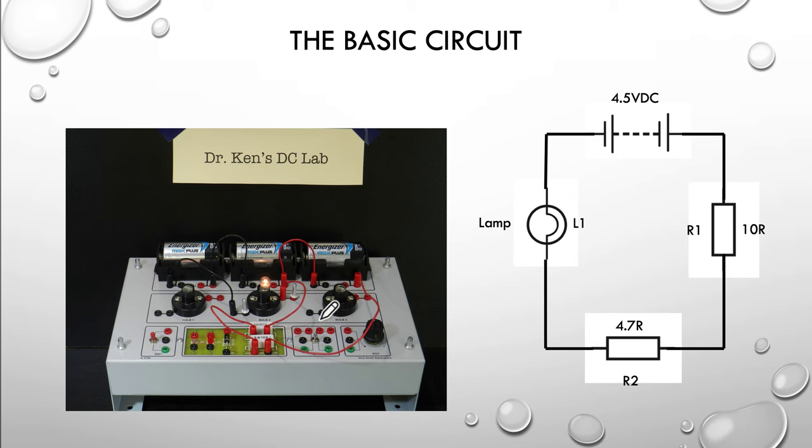So our basic circuit: you can see here we have our batteries connected together across the back to give us about 4.5 volts. You can see off the positive of the battery, through the first resistor, up through the second resistor, through to the lamp, then from the lamp back to the negative or the back end of the battery.